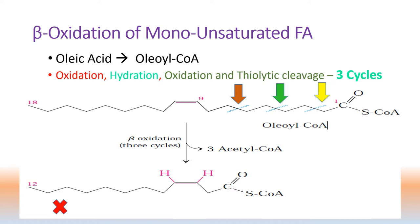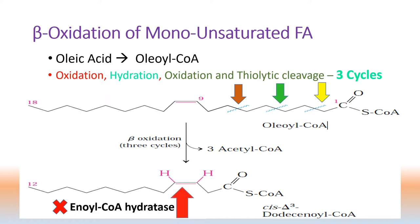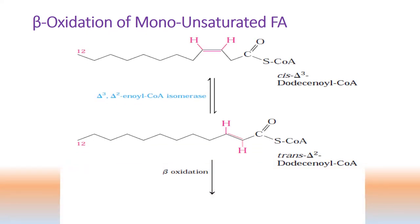Now looking at this 12-carbon structure, at carbon number two and three there is a double bond in cis configuration. Due to the presence of this cis configuration, enoyl-CoA hydratase cannot act on it. To carry on beta oxidation activity, this cis configuration must be converted into trans configuration. This cis-3 dodecenoyl-CoA — a 12-carbon fatty acid — requires an enzyme known as isomerase.